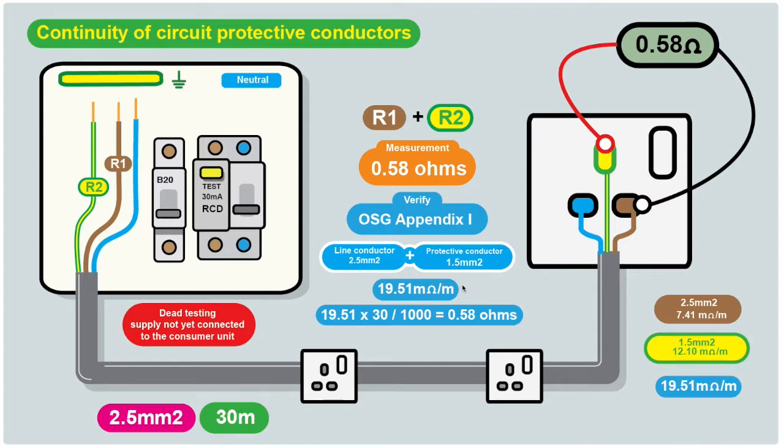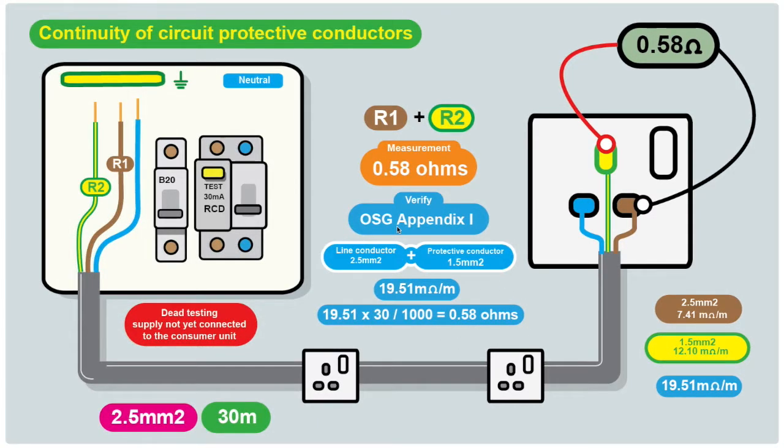It's some simple maths. All we need to do is times 19.51 milliohms by 30. Don't forget that's the length of the circuit. You get an answer and we divide that by a thousand to convert the milliohms into ohms. We've done the maths and the maths confirms a reading of 0.58 ohms for the length of the circuit, and that correlates with the measured reading that we took with our meter.